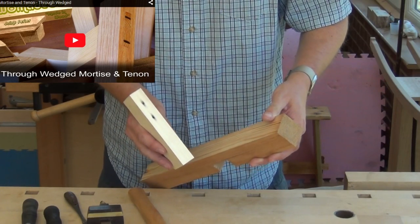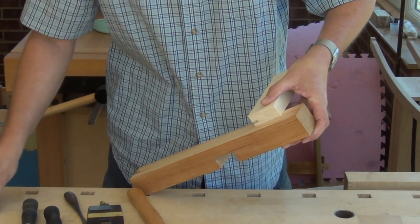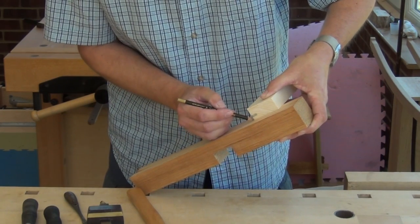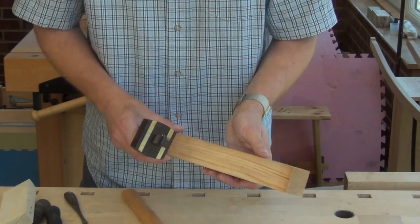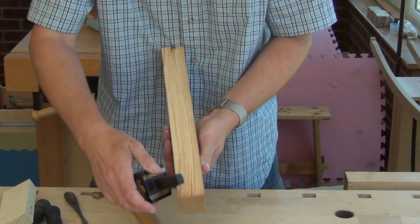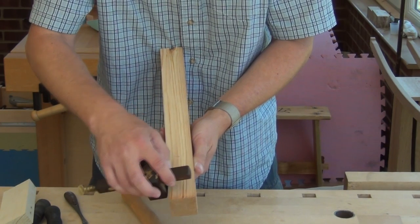The first thing I want to do is lay out for the mortise. And it's going to be a little bit shorter than the tenon component. So I'll just mark that size as a reference. I've set my marking gauge to center the mortise on the wood. I'll describe a couple of light lines between those two marks.